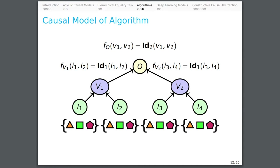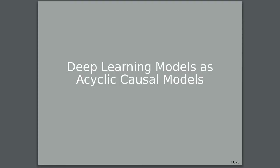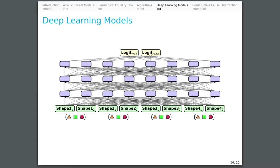Now consider a three-layer feedforward neural network trained on the hierarchical equality task, where objects are represented by random two-dimensional vectors. Each layer of neurons is determined by passing the previous layer through a linear transformation and a nonlinear function. This deep learning model is easily represented as a causal model with 34 variables: eight variables for the inputs, two for the outputs, and eight for each of the three hidden layers. Each variable is determined by every variable in the previous row according to the weights of the neural network. This model encodes each object as a random vector with two dimensions and encodes the output in a two-dimensional vector containing a probability distribution over true and false.